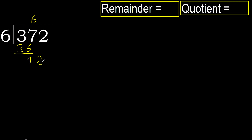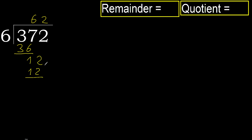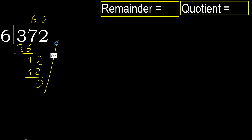Next: bring down 12. 6 multiplied by 2 is 12. Is not greater — subtract. Next, there is no remainder, therefore finish.